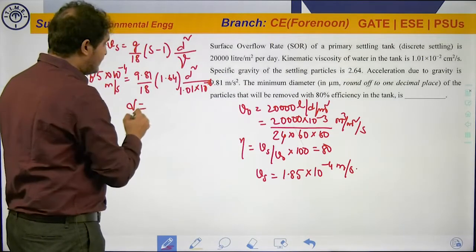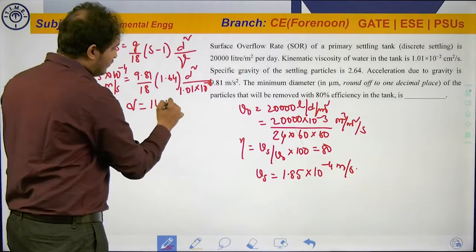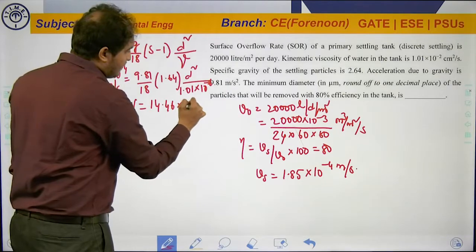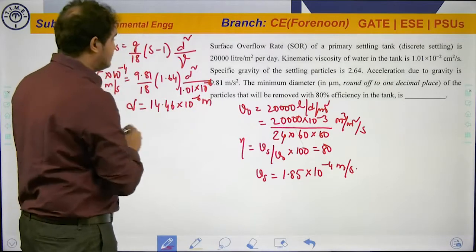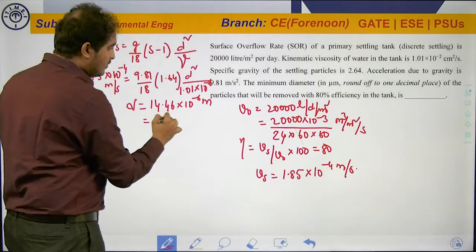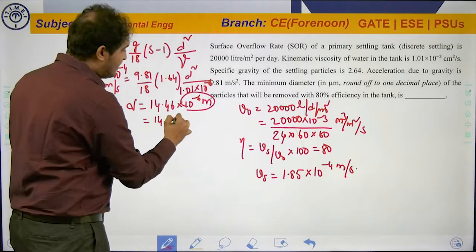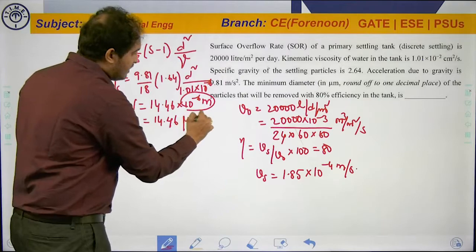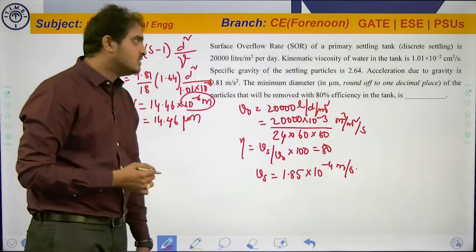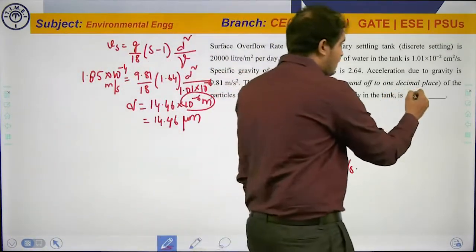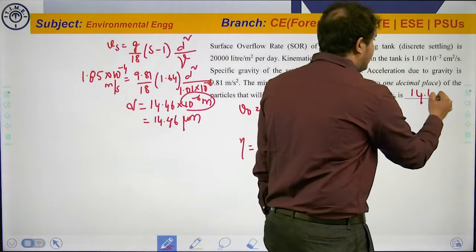From this on solving, we will be getting D = 14.46 × 10⁻⁶ meters. That implies, we know 10⁻⁶ meters equals 1 micrometer. Therefore, the minimum diameter required is equal to 14.46 micrometers. Hence, our answer is 14.46.